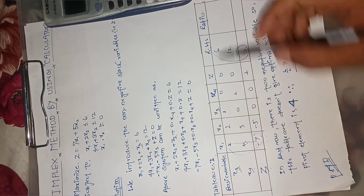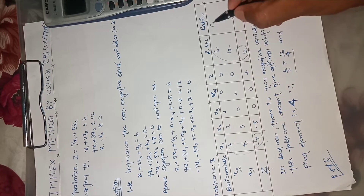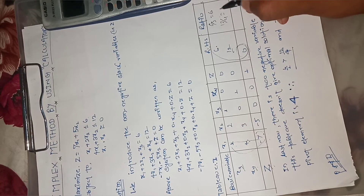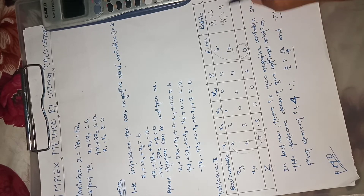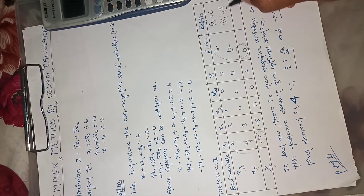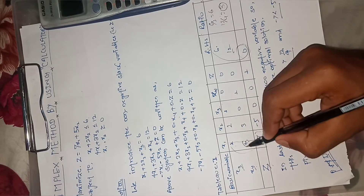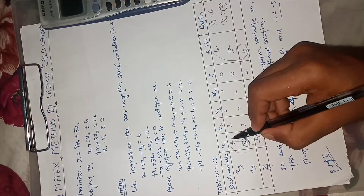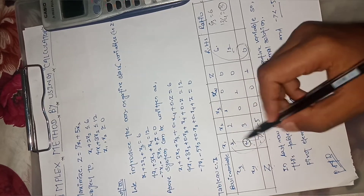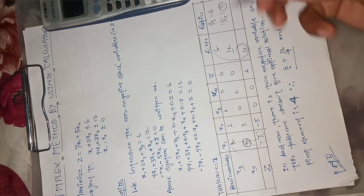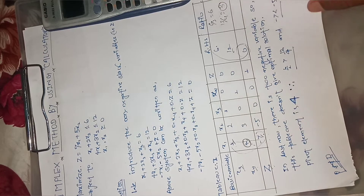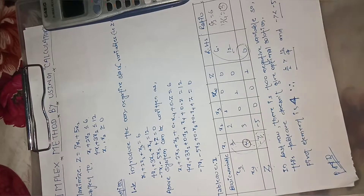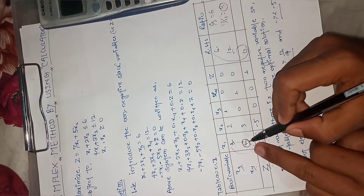Looking at the ratio column: 6 divided by 1 is 6, and 2 divided by 4 is 3. The smallest positive number is 3, so 3 is the pivot element. By row operation, 1 divided by 0 gives 0, and we need 1.